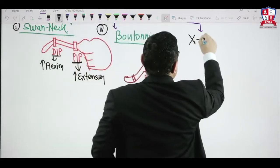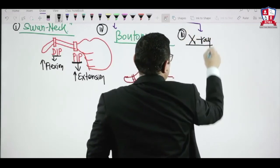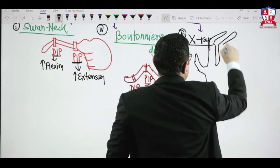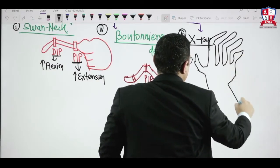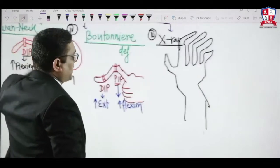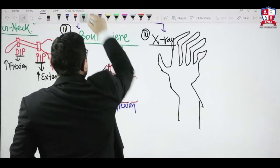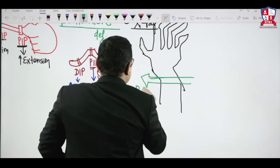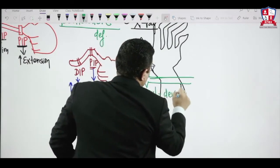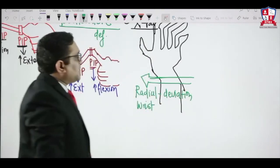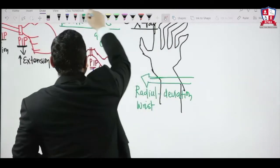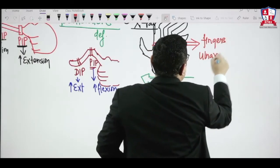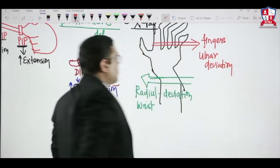On X-ray in rheumatoid arthritis, a characteristic finding is radial deviation of the wrist joint. If you observe the fingers, they show ulnar deviation. So the wrist shows radial deviation while the fingers show ulnar deviation — these are important clinical and radiological findings in rheumatoid arthritis.